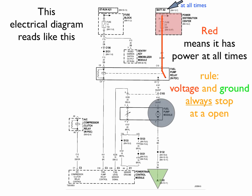Voltage and ground always stop at an open circuit. Now here this switch is open, so since it is an open circuit, that red or that power is going to stop right there. Always.